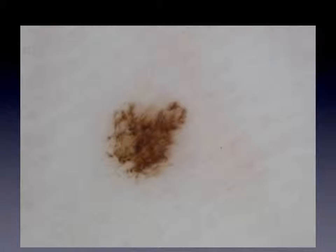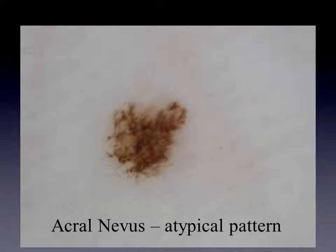But which pattern can we see here? We don't really see a parallel furrow pattern, nor a globular pattern, or a homogeneous pattern, or a lattice-like pattern. So we have to call this an atypical pattern. This is a nevus with an atypical pattern.